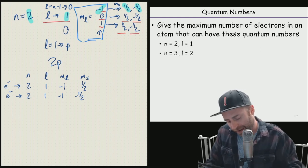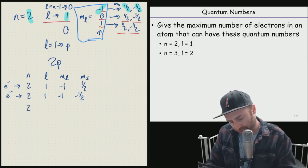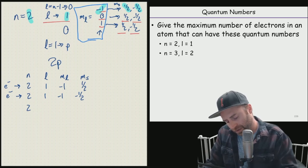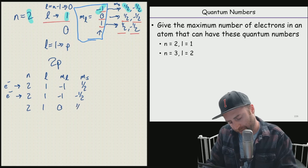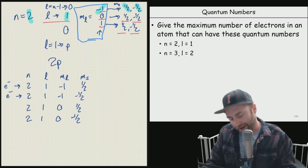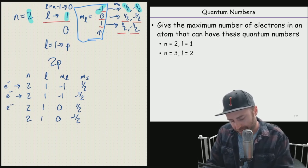So we could have two, one, zero, one half, and two, one, zero, negative one half. And each one of these are going to be their own individual electron.